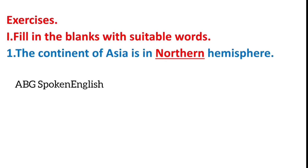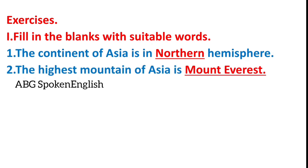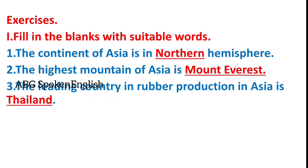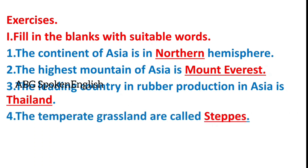The continent of Asia is in the Northern Hemisphere. The highest mountain of Asia is Mount Everest. The leading country in rubber production in Asia is Thailand. The temperate grasslands are called steppes.